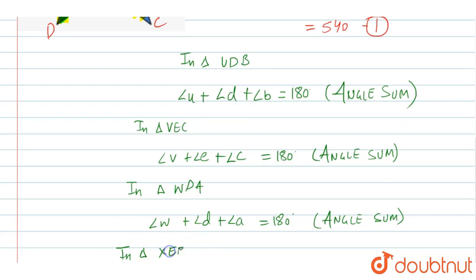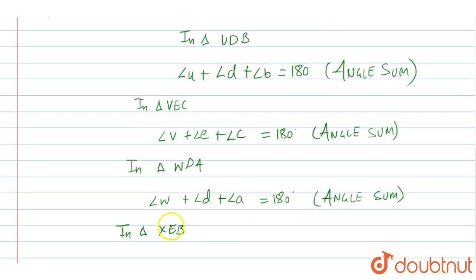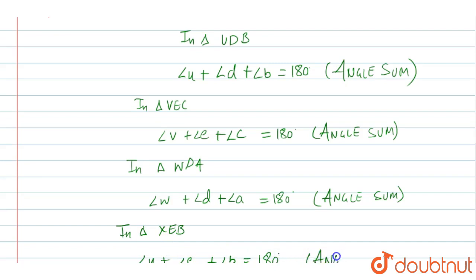Next, we take triangle XEB. In triangle XEB: angle X plus angle E plus angle B equals 180° by the angle sum property. This is equation 5.